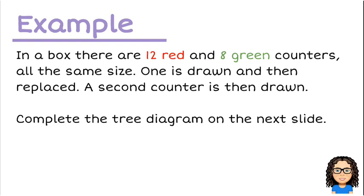So in this example we're told we've got a box and in the box we have 12 red and 8 green counters. So those are two important pieces of information, all of the same size.